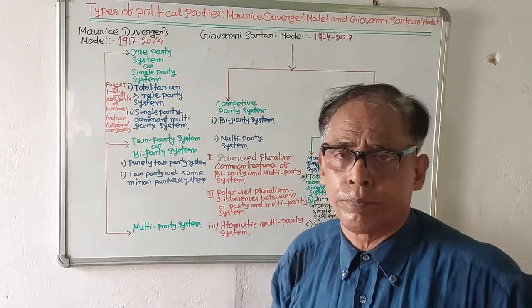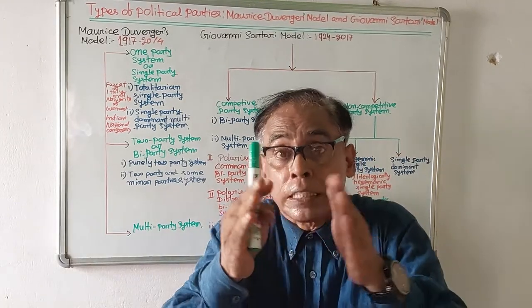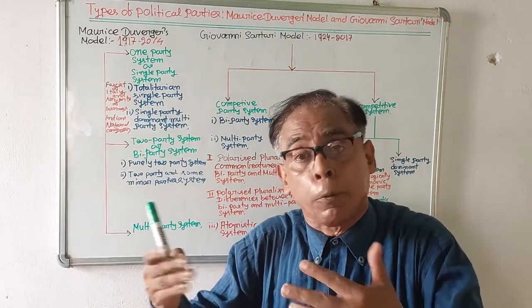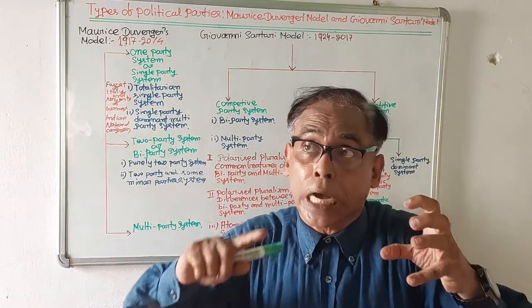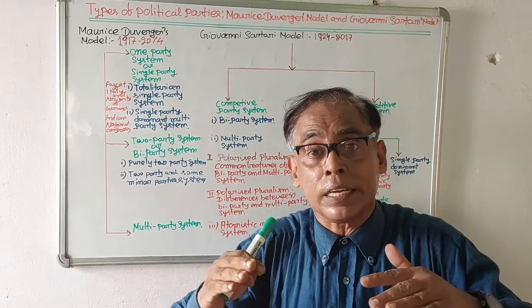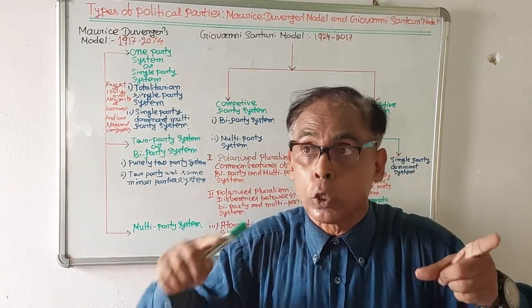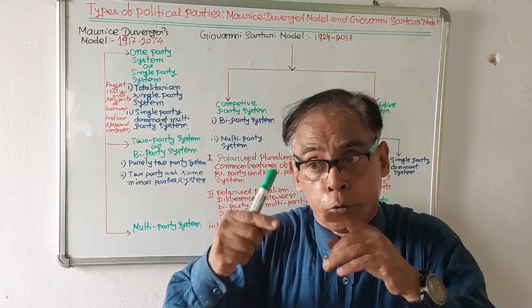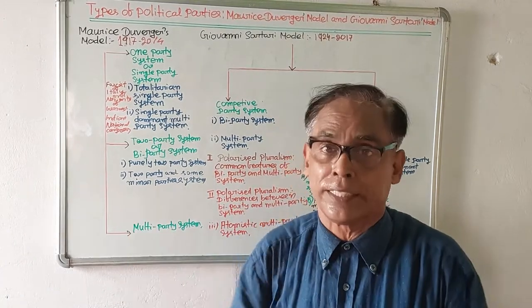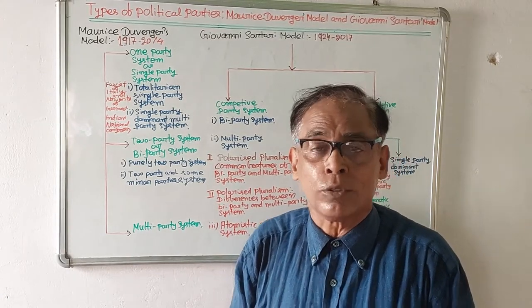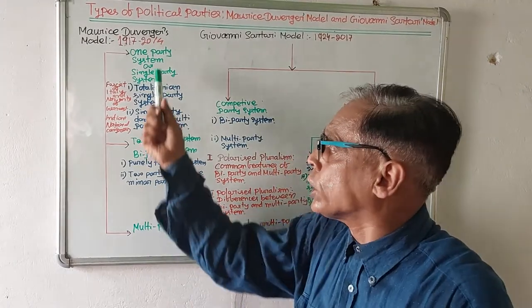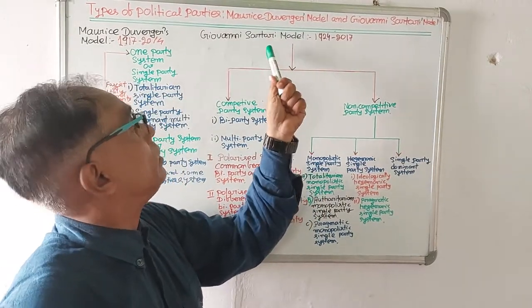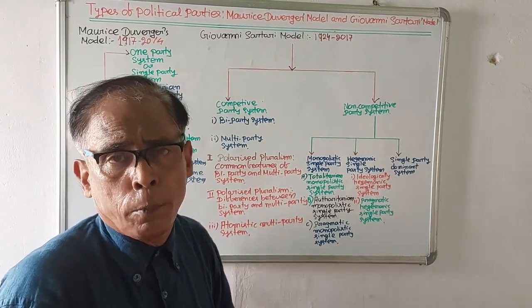Finally, Duverger has described the multi-party system. Multi-party system means if in a country many political parties are found, there is no restriction in the formation of political parties, and each party is capable of forming the government. Sometimes if a party is unable to form the government alone, it forms the government with the help of other parties — this is known as a coalition government.